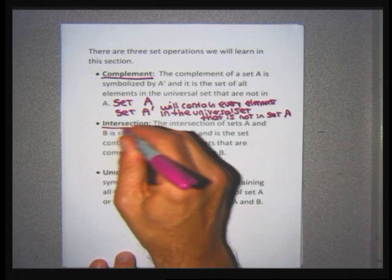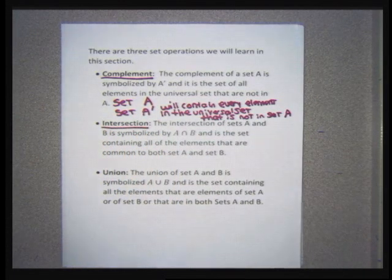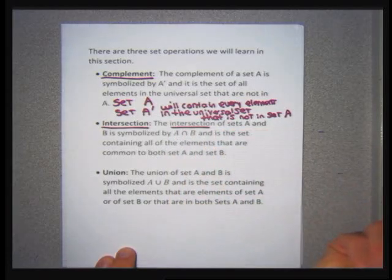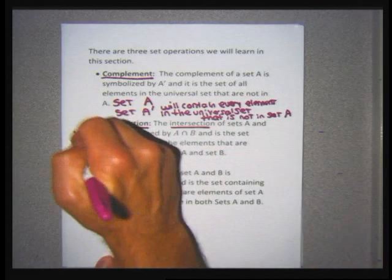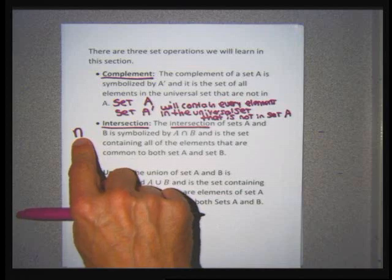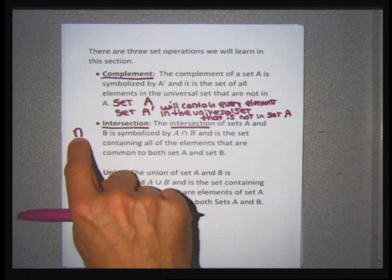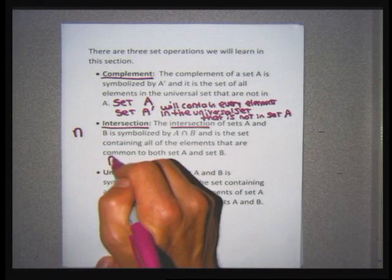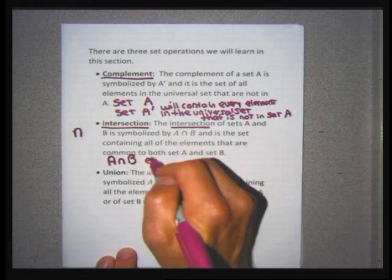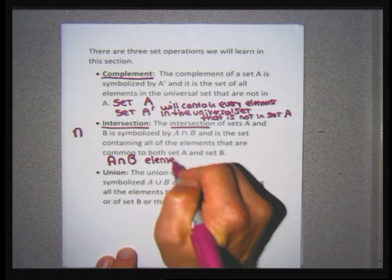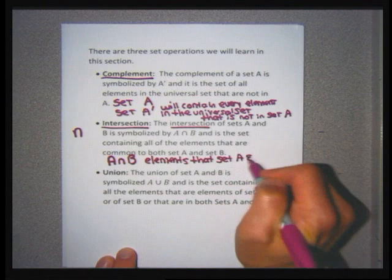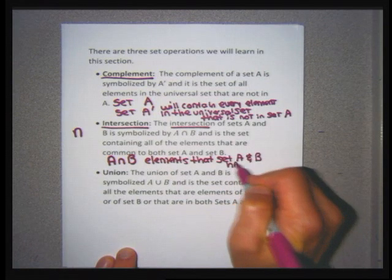Intersection is the next operation. Intersection is what the sets have in common. When I see the word intersection, I think 'what they have in common.' The symbol for intersection is this upside-down U. Sometimes I'll say 'intersection,' sometimes I'll say 'and' — they're used interchangeably. The symbol A intersection B asks me to find the elements that both A and B have in common. You don't really need a universal set for intersection.